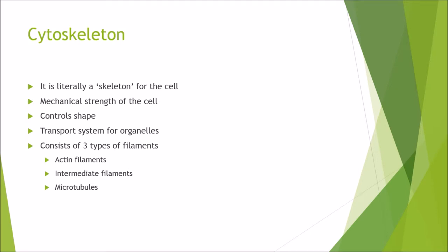So what is the cytoskeleton? It is literally a skeleton for the cell. It provides mechanical strength for the cell, controls the shape of the cell, helps transport organelles and other things around the cell, and actually consists of only three types of filaments: actin, intermediate, and microtubules.